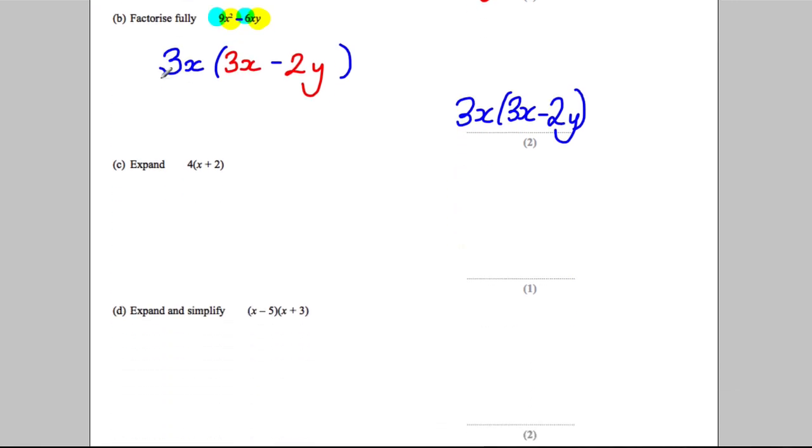Okay, part C. Expand the following. This means 4 multiplied by x plus 2. So 4 multiplied by x is 4x, and 4 multiplied by positive 2 is positive 8.